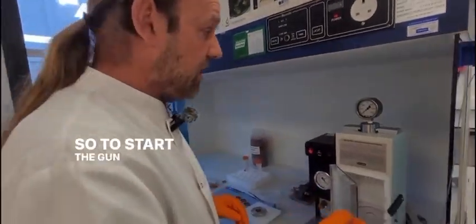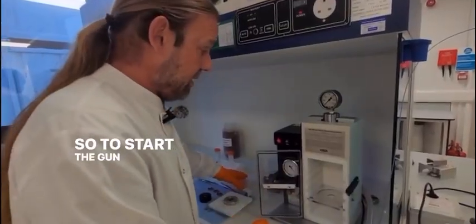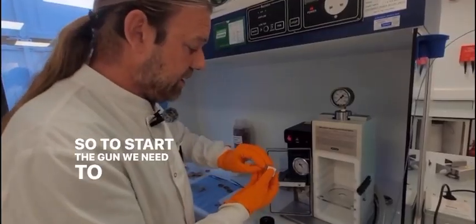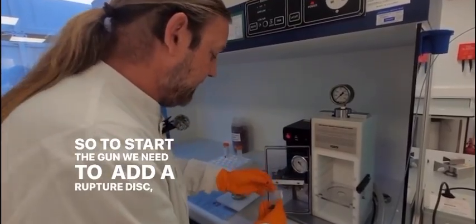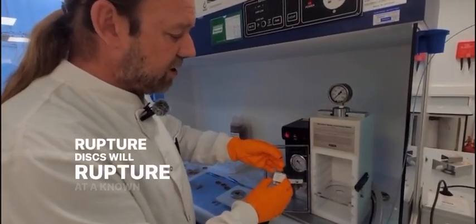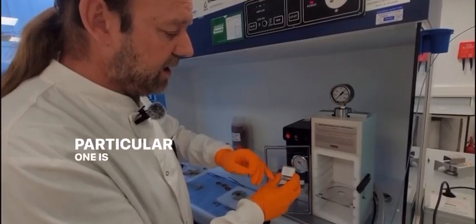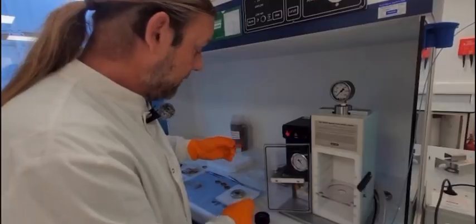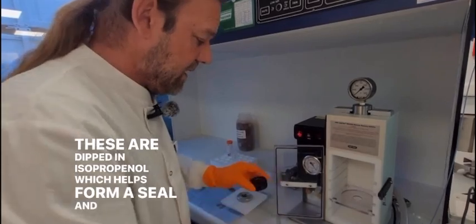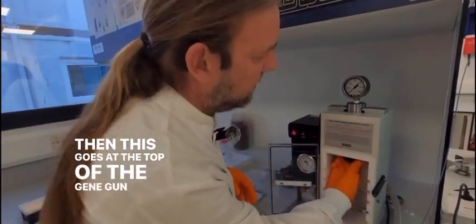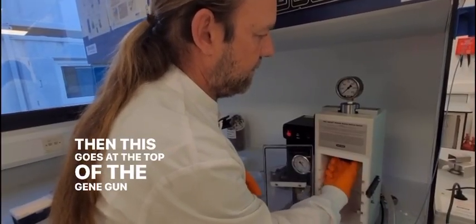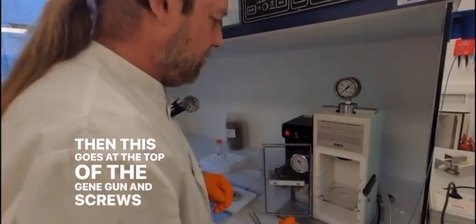So to start the gun, we need to add a rupture disc. These rupture discs will rupture at a known pressure and this particular one is 1100 psi. These are dipped in isopropanol which helps form a seal and then this goes at the top of the gene gun and screws in like that.